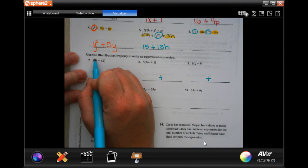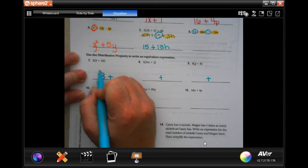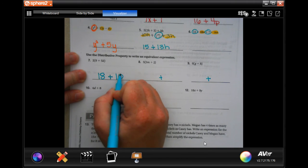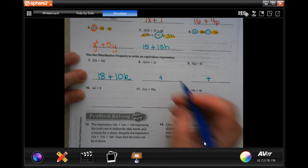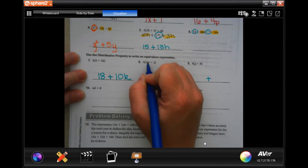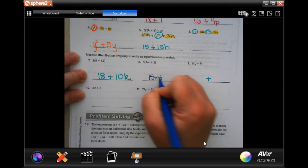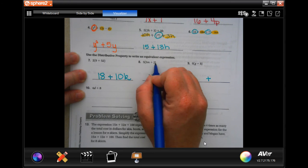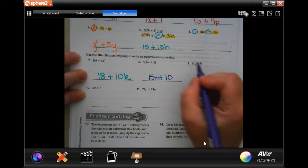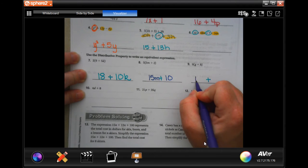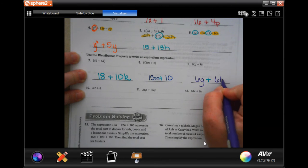So 2 times 9 is 18, and 2 times 5 is 10, and I'm going to keep the k. All right. So now 5 times 3 is 15, and I'm keeping the m, and then 5 times 2 is 10. I'm done.